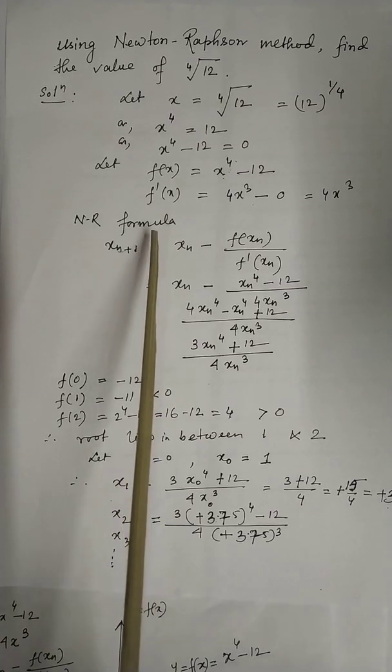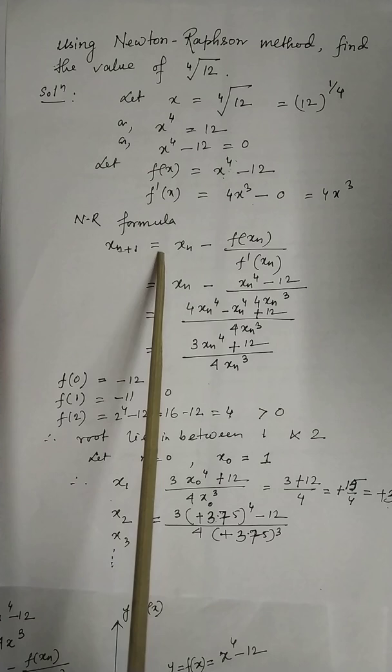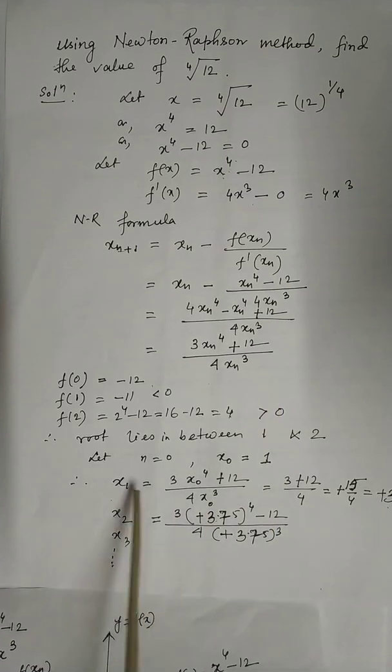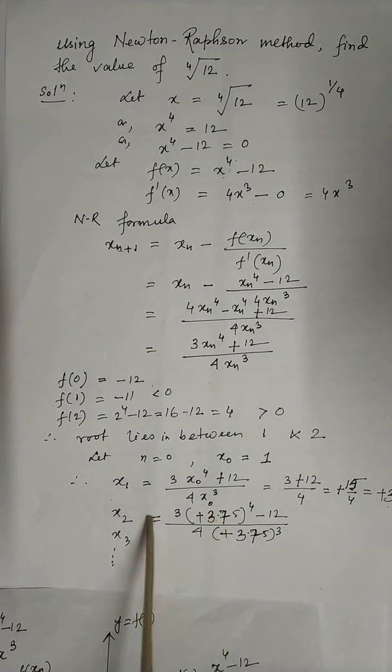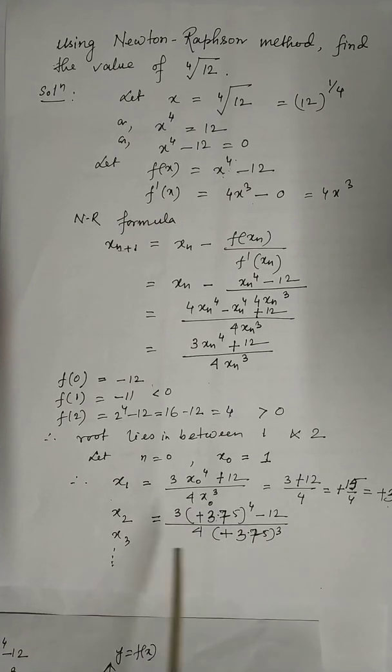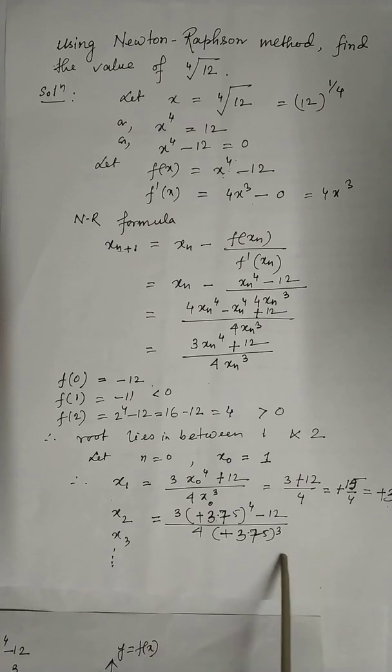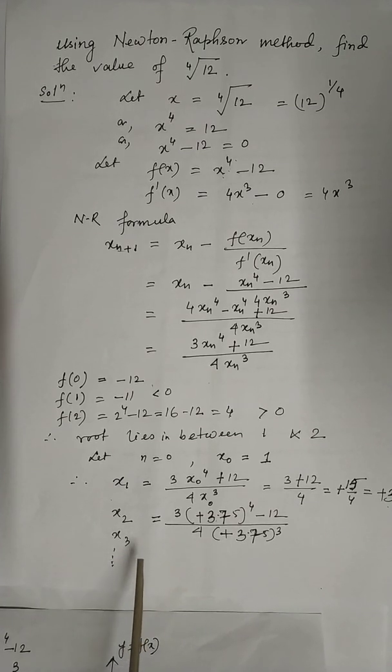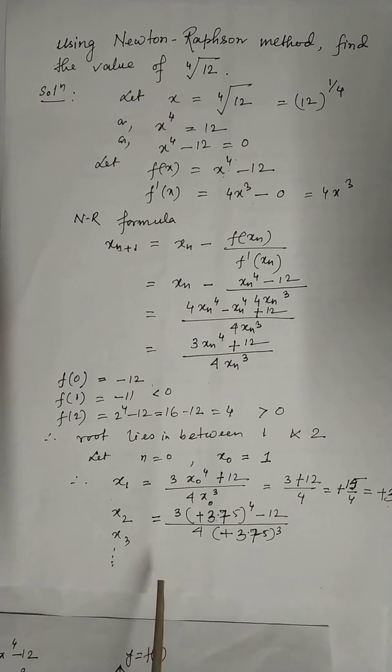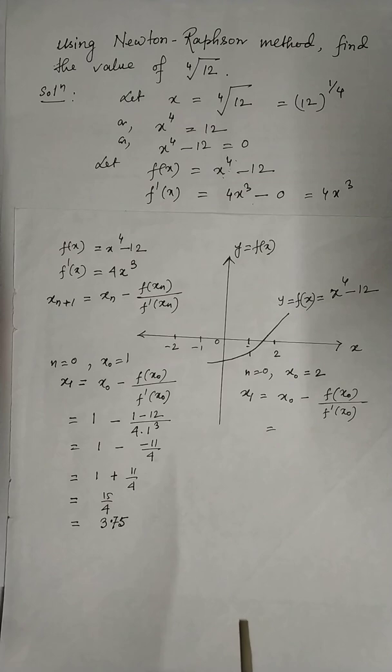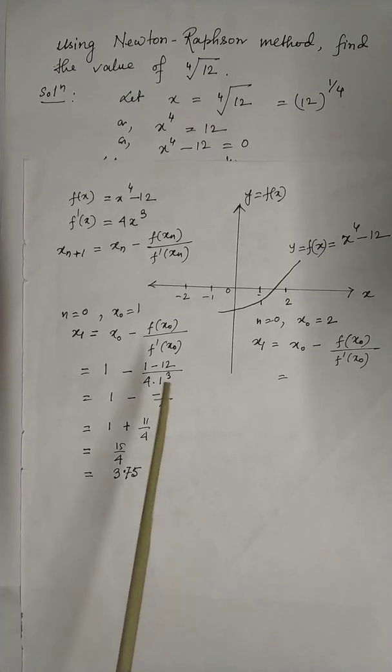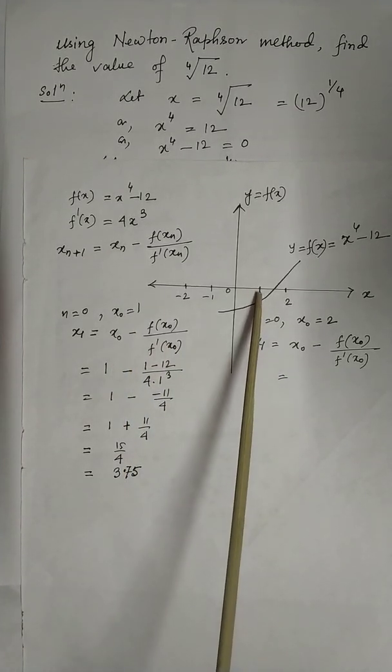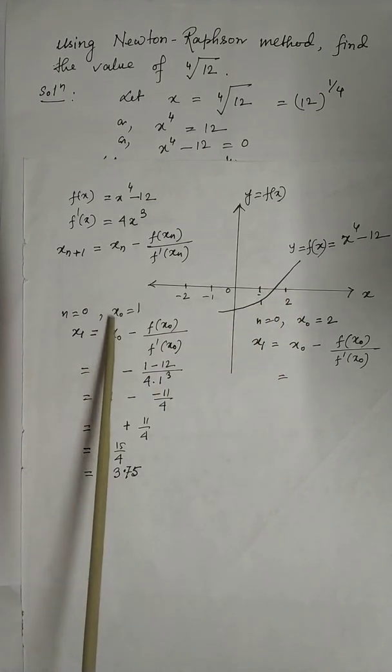Again, putting n equals 1 in the Newton-Raphson formula, then you will have x_2 equals x_1 minus f(x_1) by f'(x_1). So x_1 will be taken as 3.75 and you will have some value of x_2. Using that x_2 in the formula for x_3, you will get x_3. In this way, by some iteration, you will reach two values which will be similar at least up to three decimal places. That will be your required root. Now look, in the exam, you can approach by any method, from any side, either from negative side or from positive side.